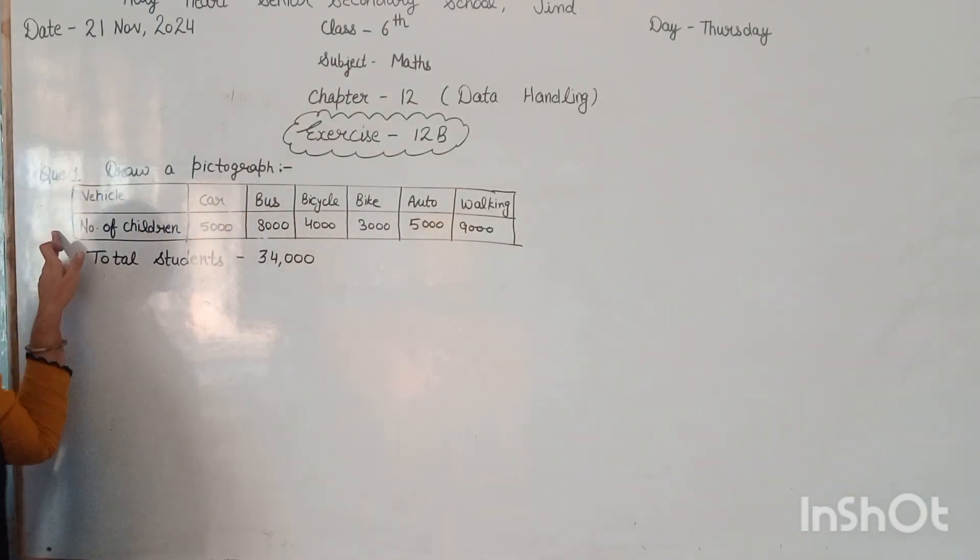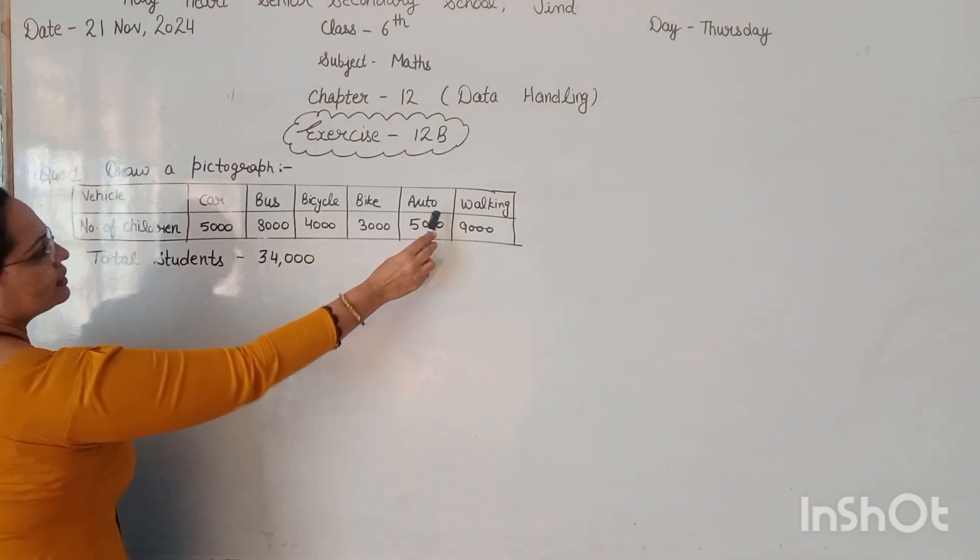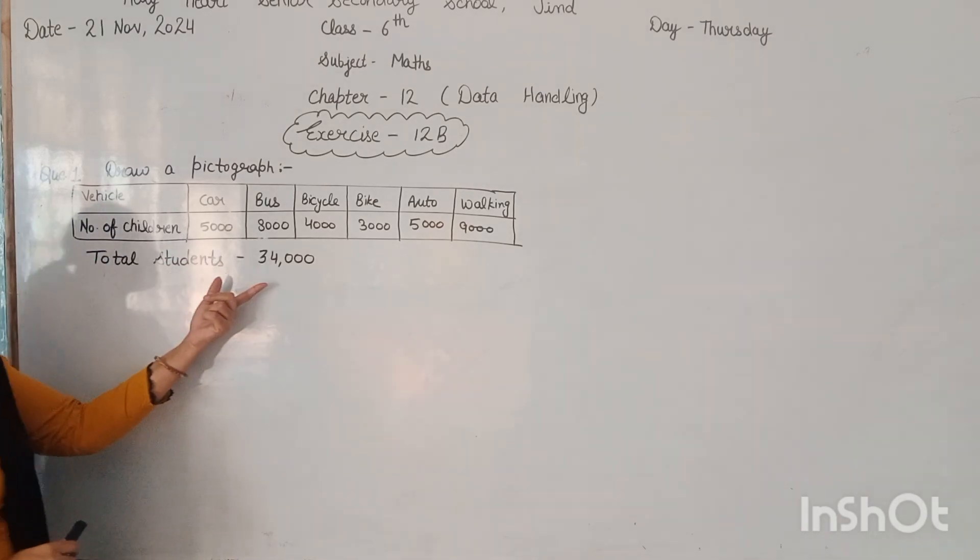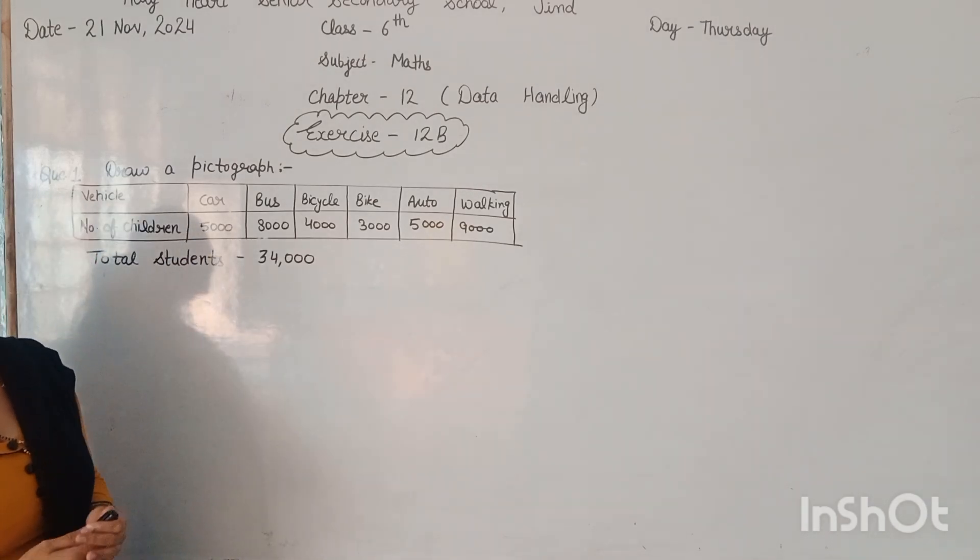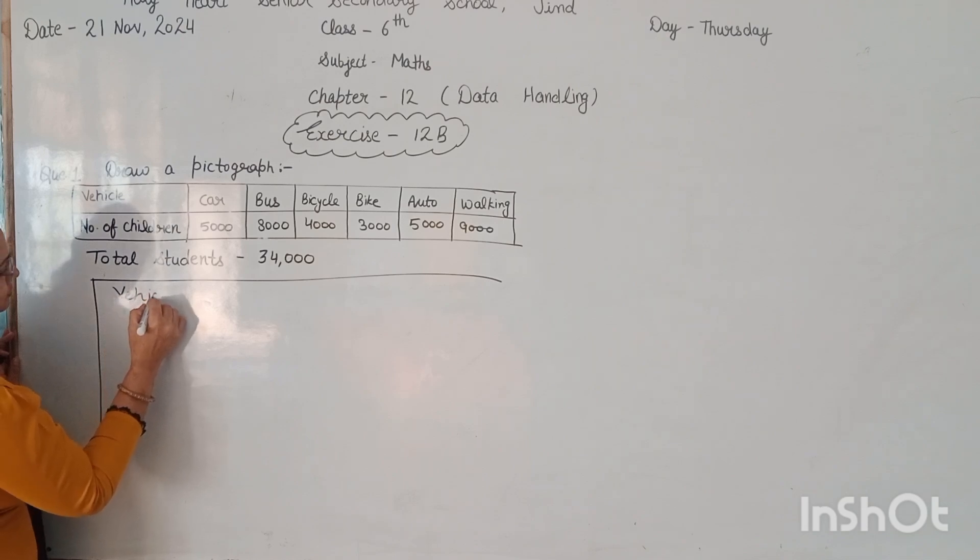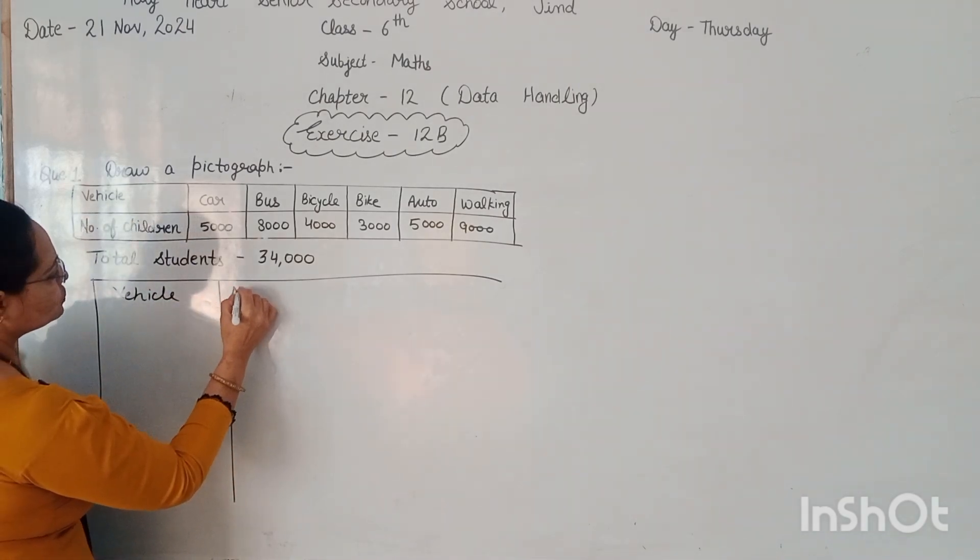We have this problem. There are the values of girls and number of children. They represent the data of the number of children. Total students are here 34,000. So here we have to prepare a table. First we have to write here the vehicle, here we have to write number of children.